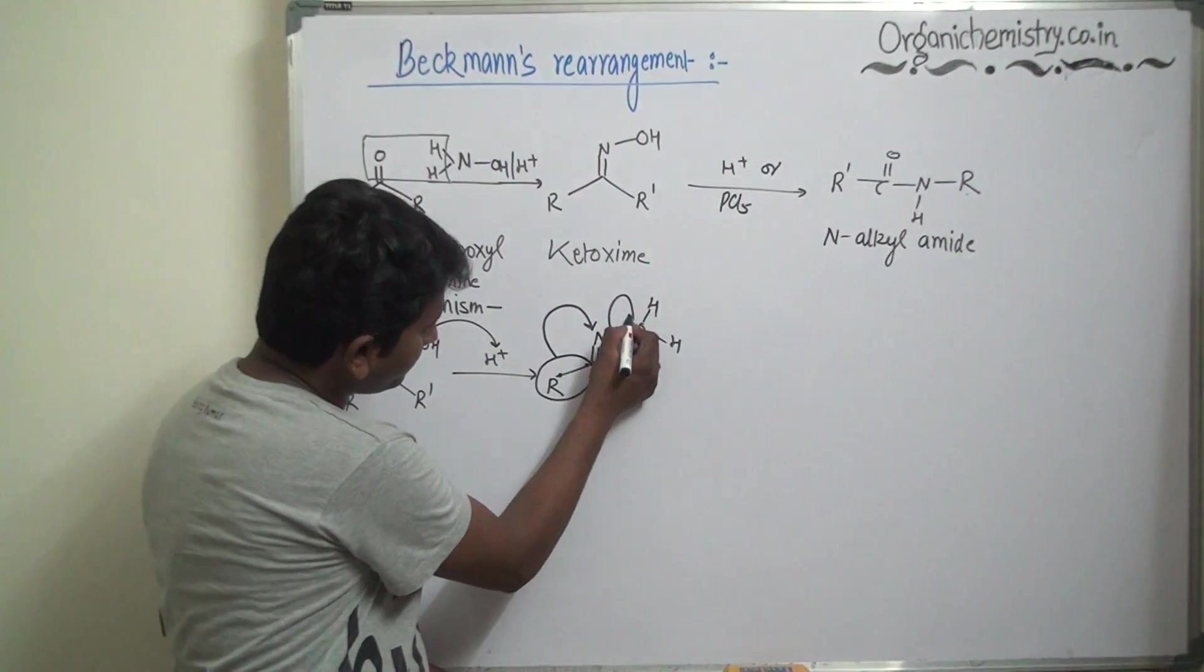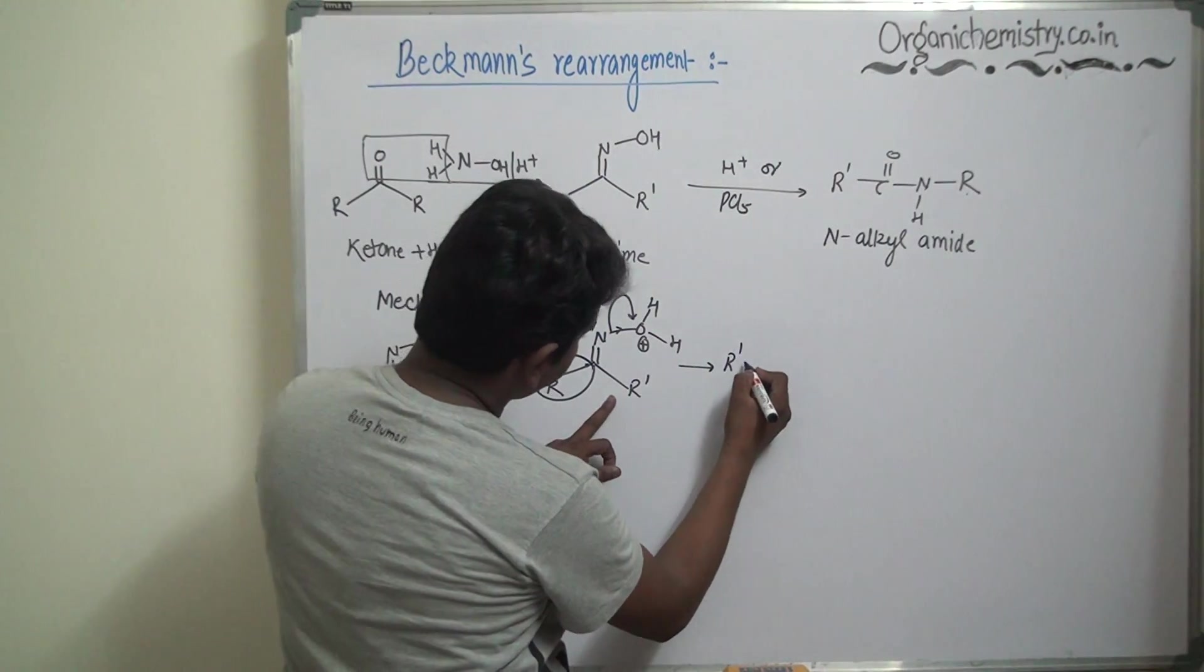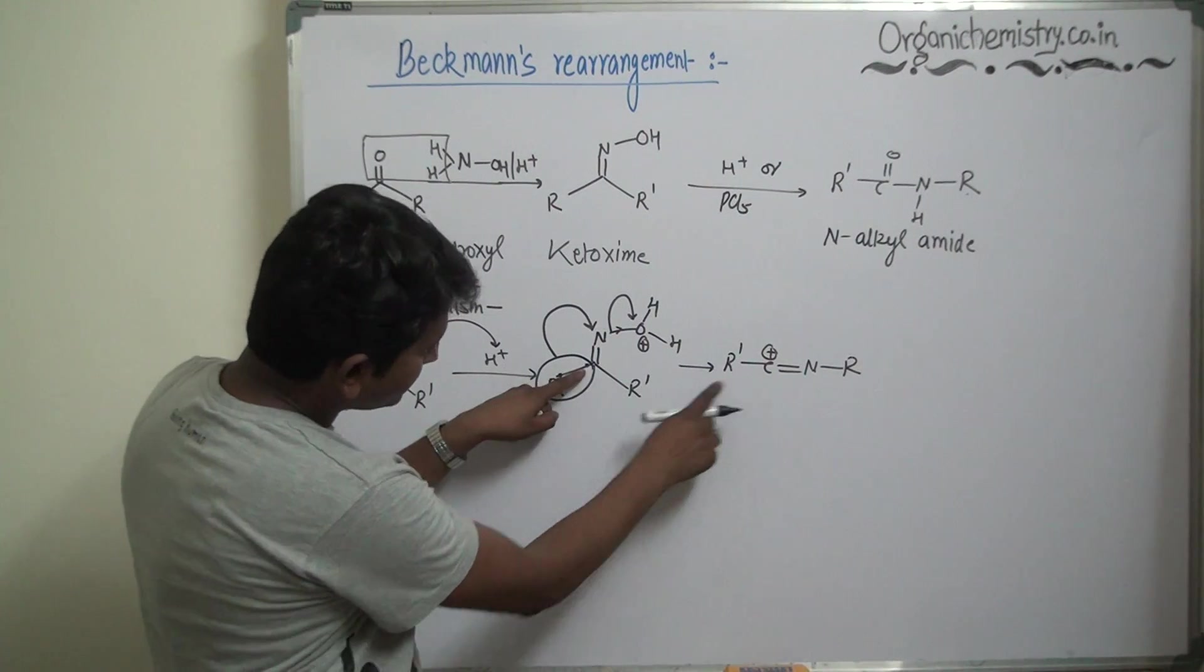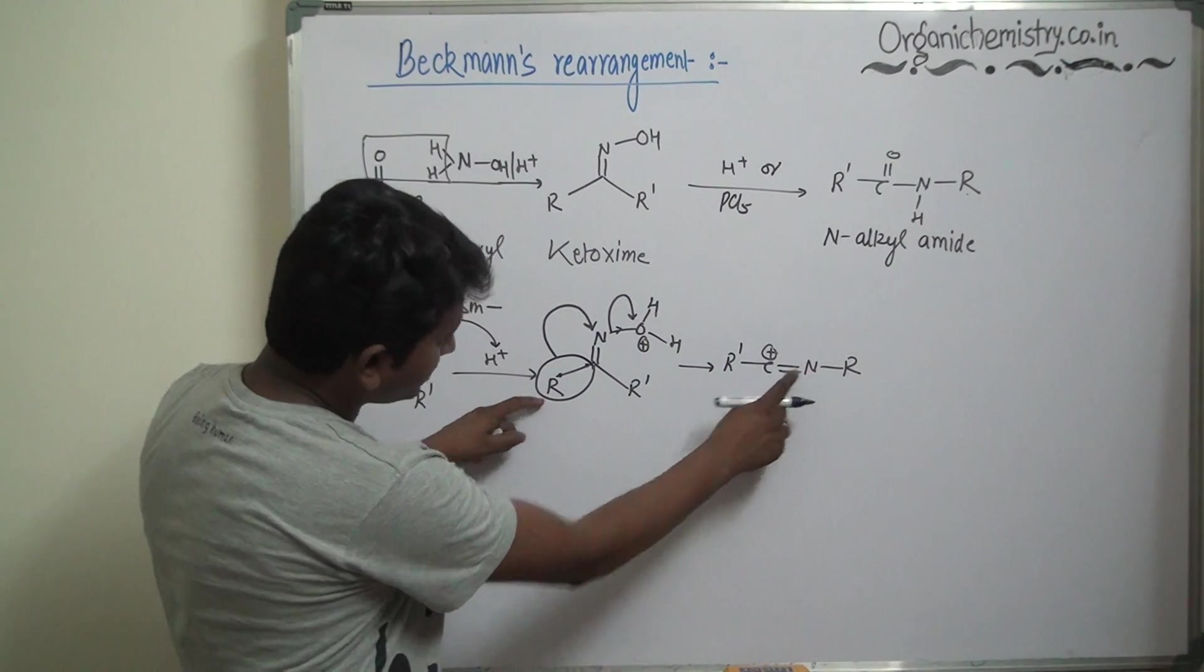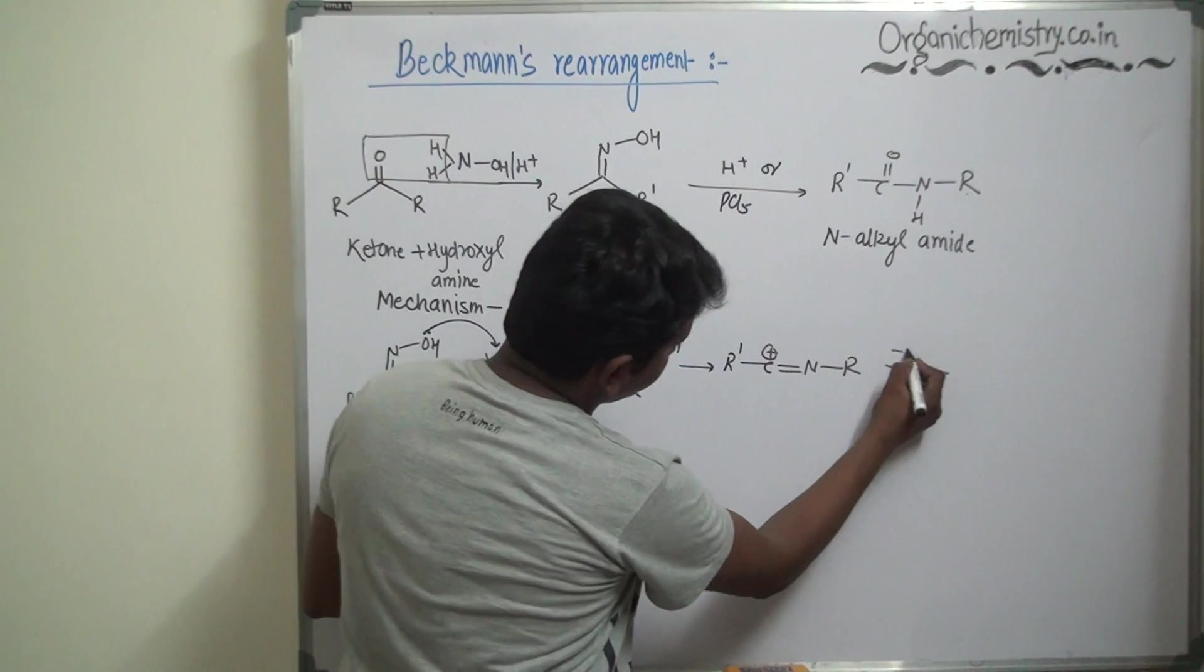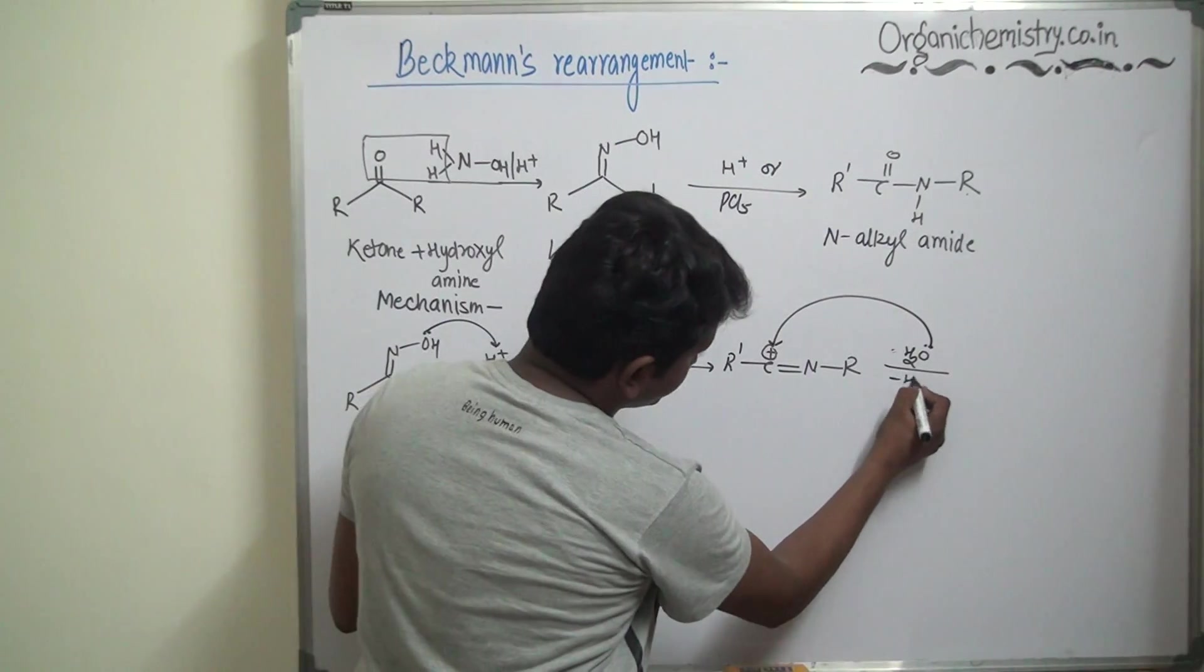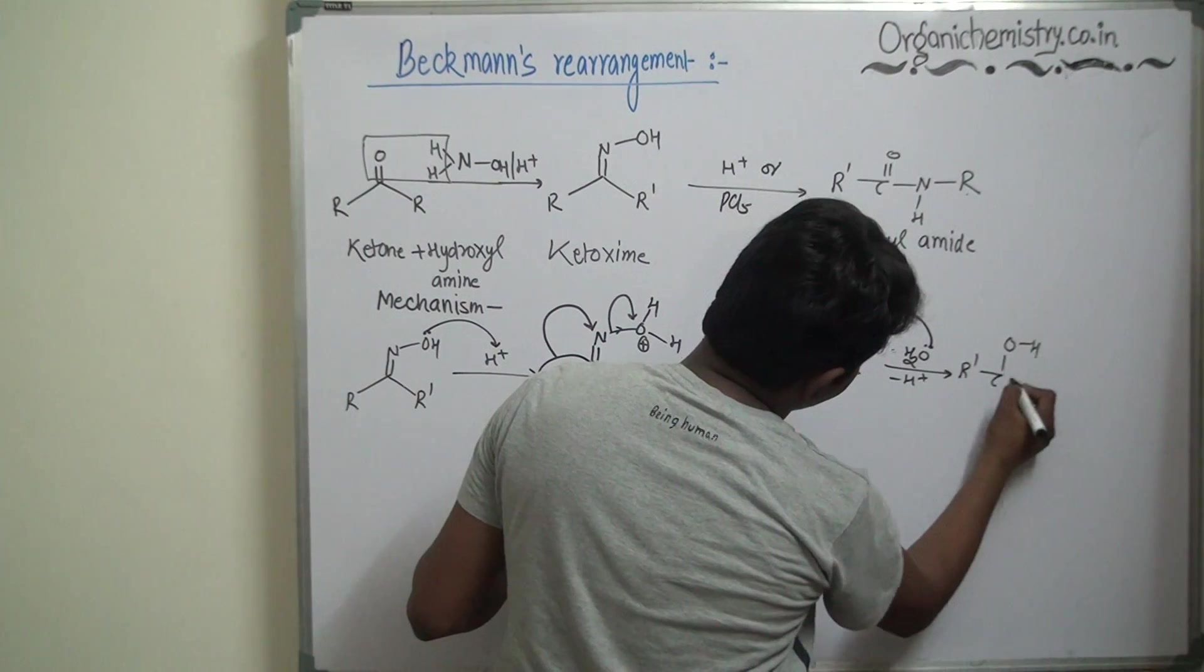And this sigma bond is broken, so R' C double bond N R, and this positive charge R' C positive N, and this N is attached with the R. This is formed. Later on, this water molecule which is removed from the system will attack over this positive carbon, loses proton to give R C O H double bond N R.